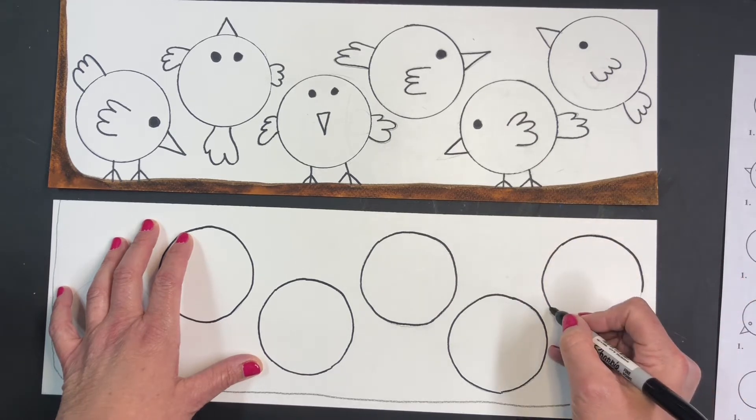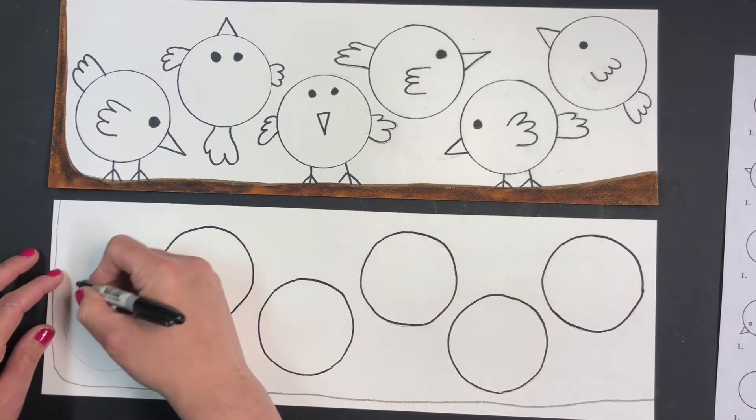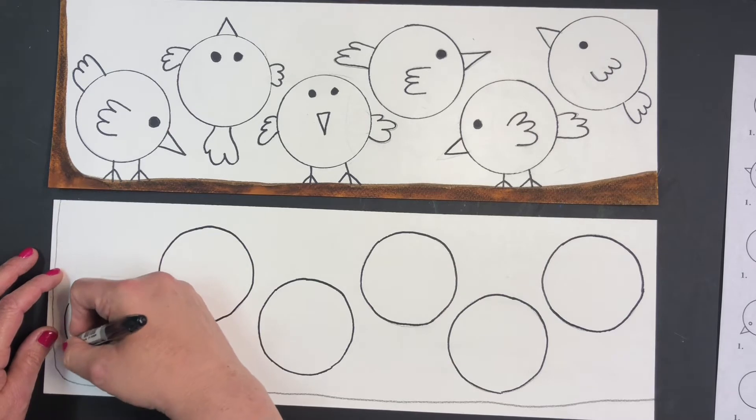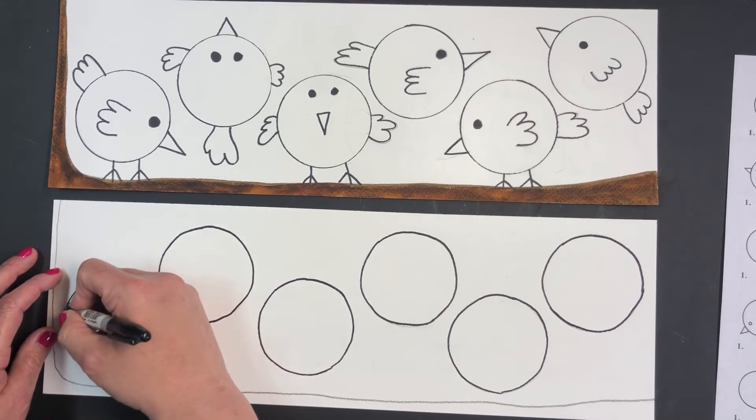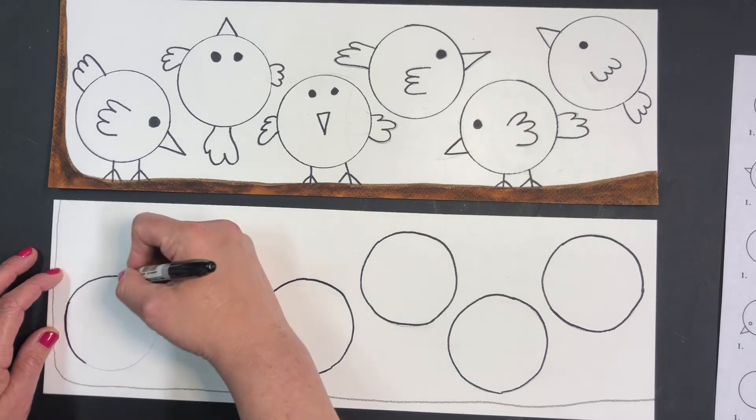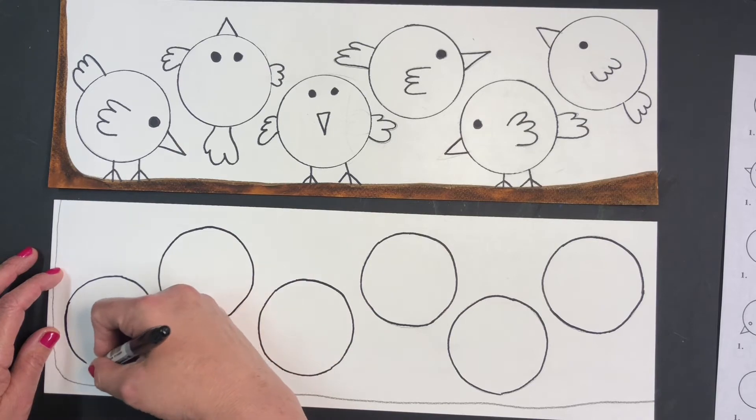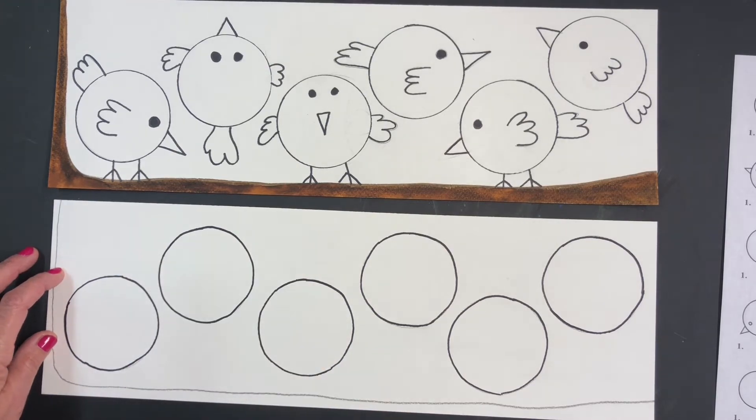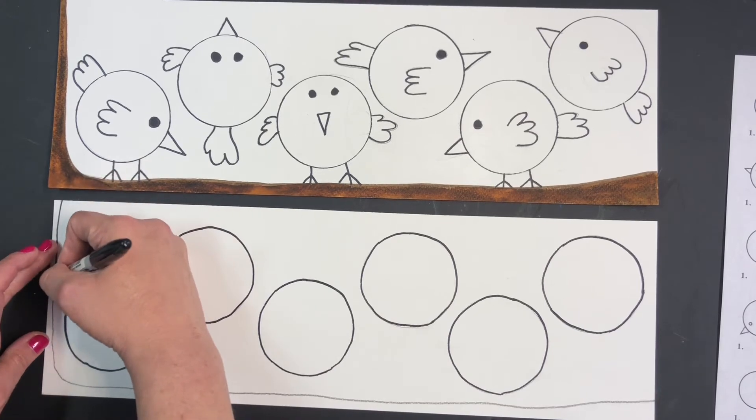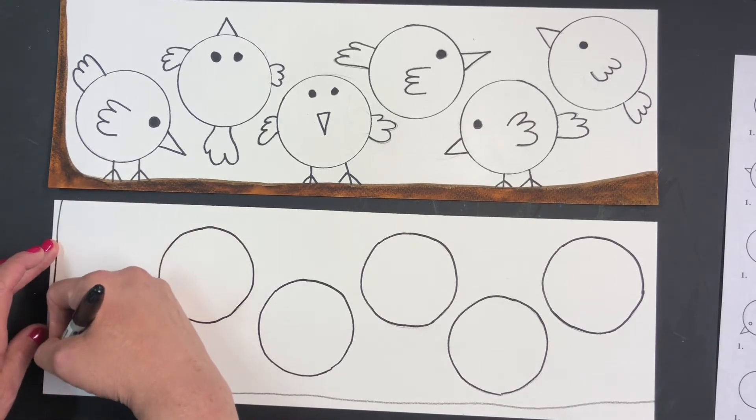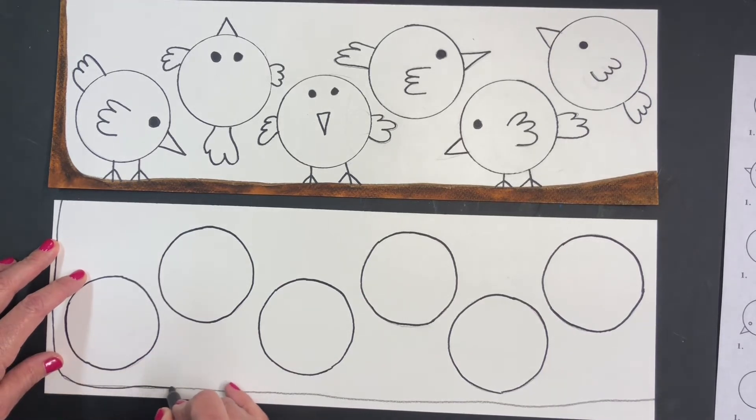So that you can see how it's done. So after you trace your six circles with pencil, I'm doing the rest of this lesson in Sharpie. You're going to draw your birds. So I'm actually going to outline this line in Sharpie too, so you can see that this is the branch here.